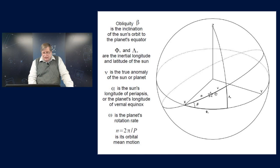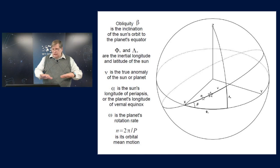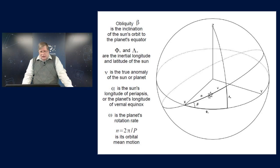In this view, it's the sun's longitude of periapsis. But if we went back to the solar-centered view, it would be the planet's longitude of vernal equinox. That's the thing that processes with the precession of equinox. I'm going to define just a couple more quantities here. Little omega is the planet's rotation rate. And n is its orbital mean motion. That's just 2 pi over the orbital period.